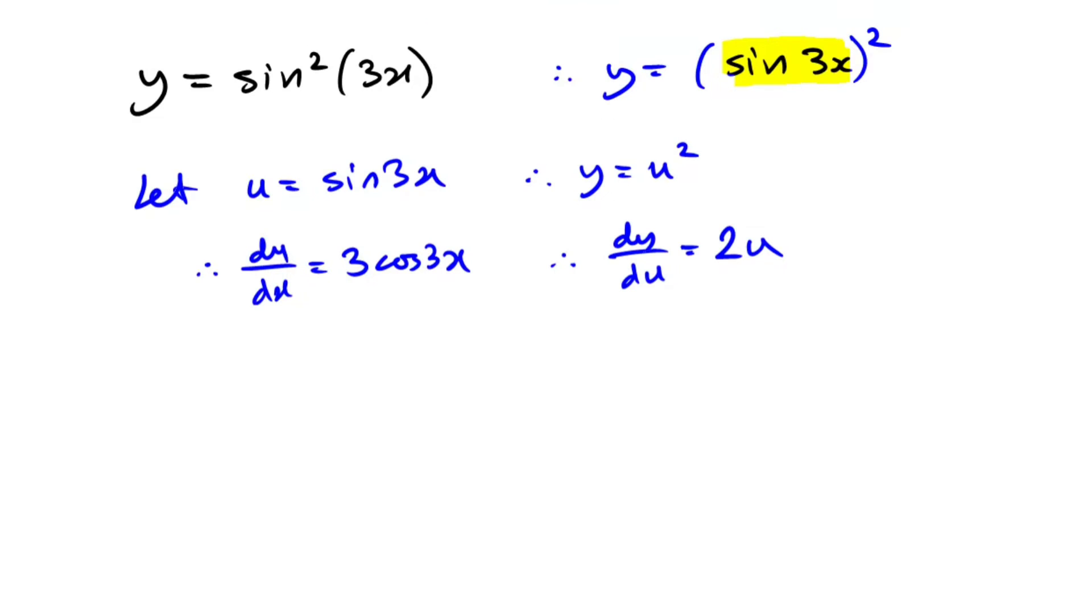Now, to get the final result with the chain rule, all you do is multiply the last two derivatives. So finally, dy over dx is what we want. It's just going to be 3 cos 3x times the 2u.